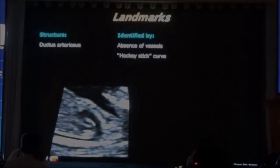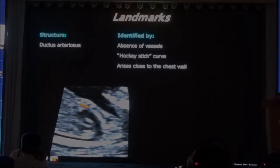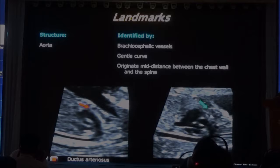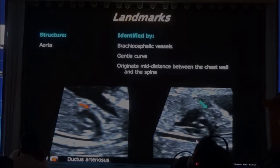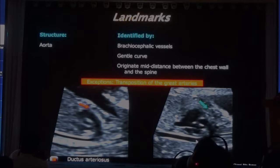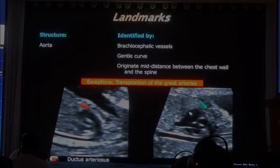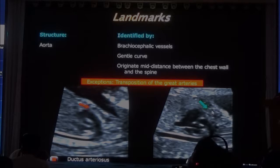The ductus has a hockey-stick curve — it has a sharp angle compared to the aorta. And also it arrives close to the edge of the chest wall, because it comes from the right ventricle. This is the aorta, and you see the aorta arises at mid-distance between the chest wall and the spine. Pay attention to that, because I will show you some examples in which a certain finding creates easily the diagnosis of transposition of the great arteries. If you have transposition, the aorta, instead of arising in the middle of the chest, will arise right behind the chest wall.